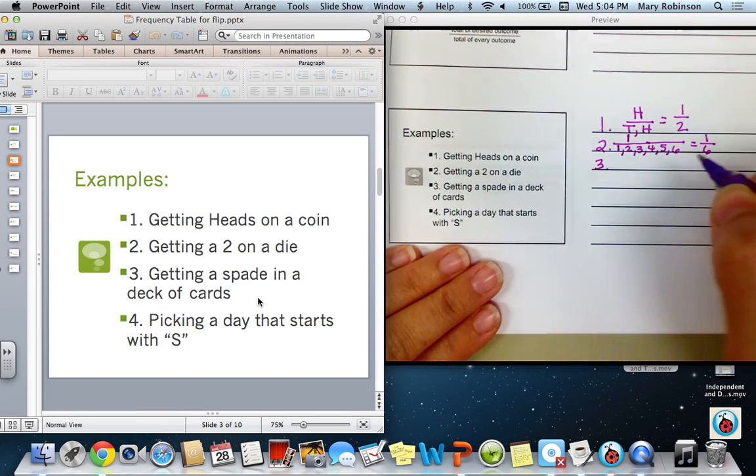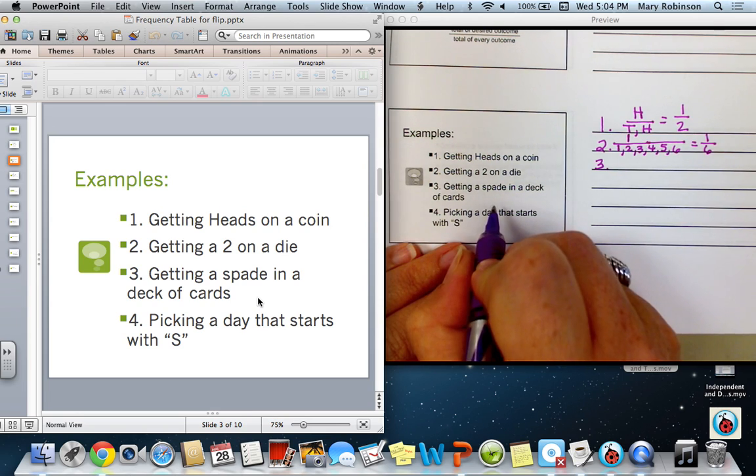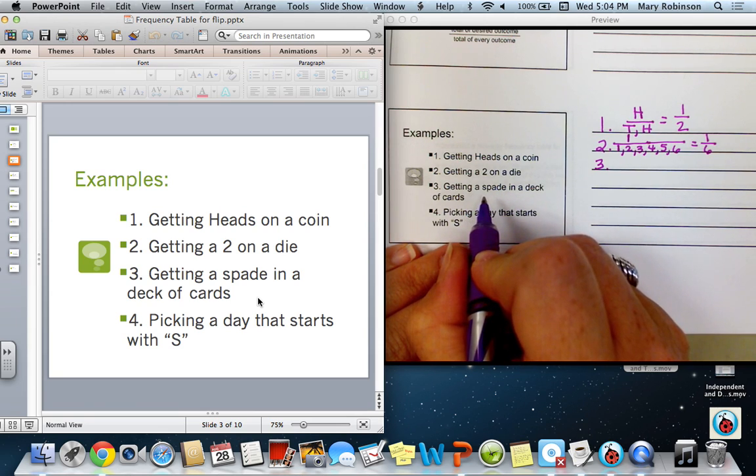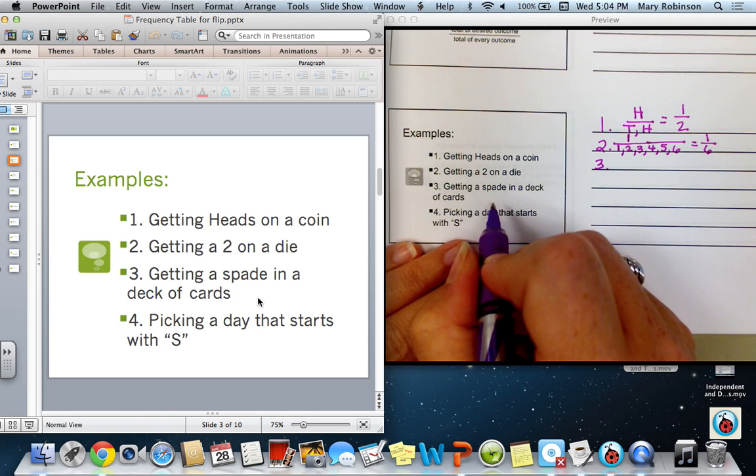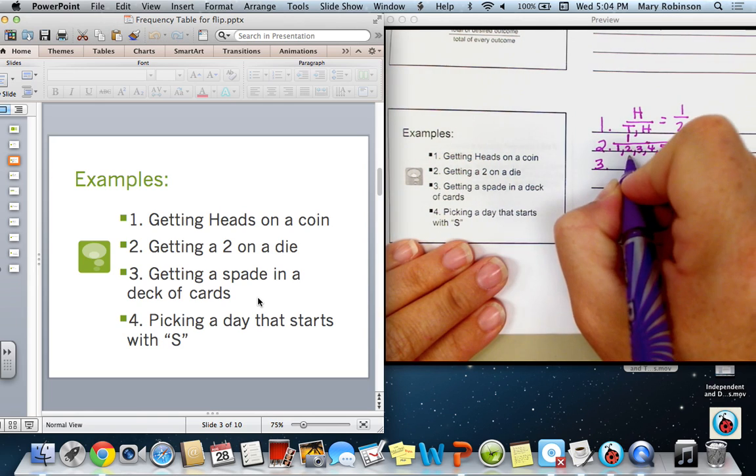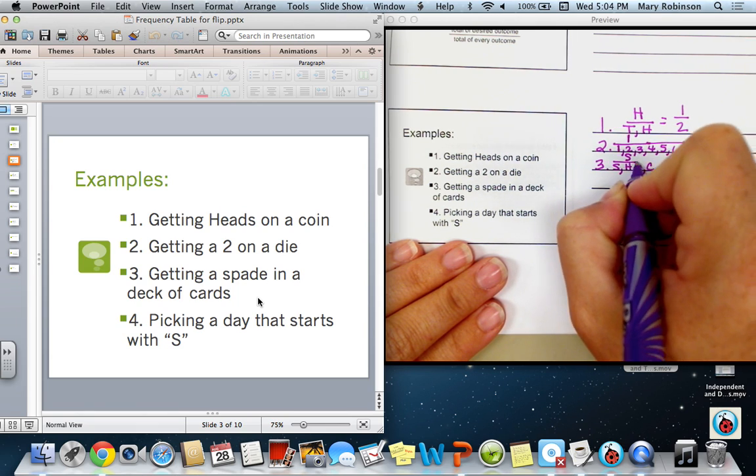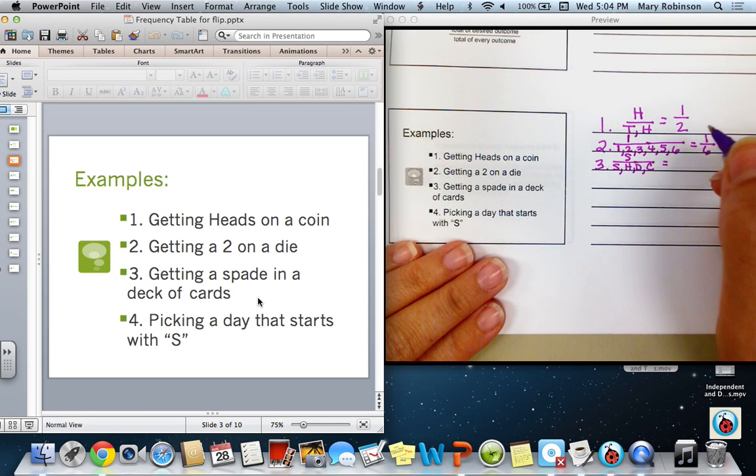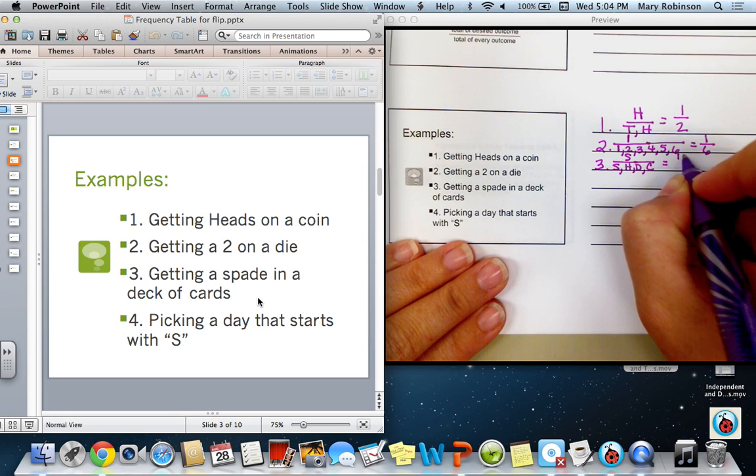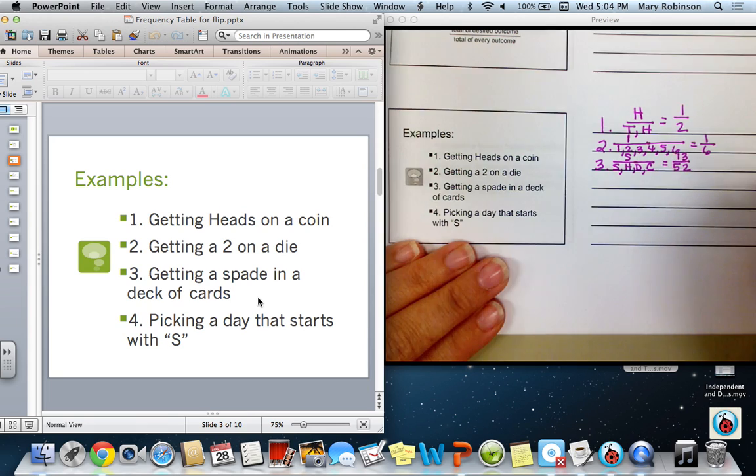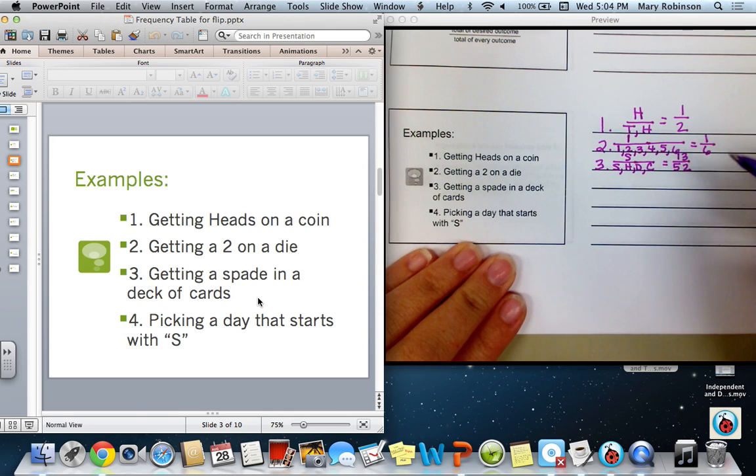For number three, the probability of getting a spade in a deck of cards. Remember that there are four suits in a deck of cards, so you have to know the total number of spades in a deck of cards. So we're looking for a spade out of spades, hearts, diamonds, and clubs. There are 13 spades out of 52 cards in a deck, so the probability of picking a spade is 13 out of 52.